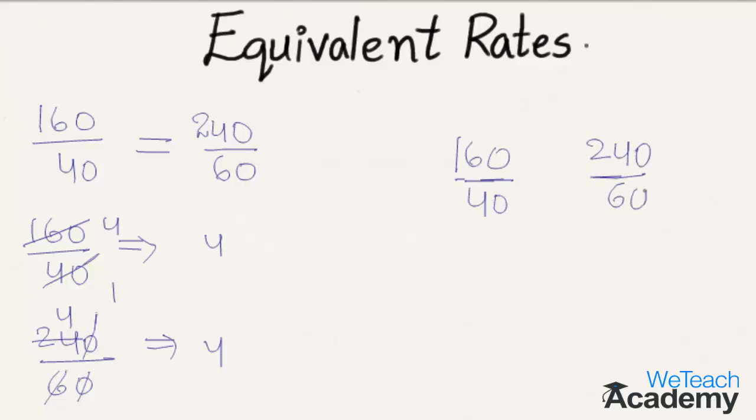Let us cross multiply. We get 160 into 60 on the left hand side, which equals 40 into 240 on the right hand side. We get 9600 on the left hand side, which equals 9600 on the right hand side. So both the rates are equivalent.